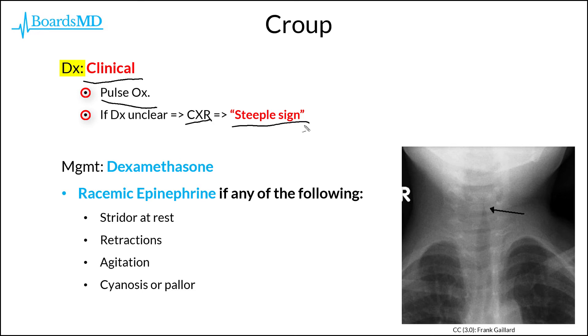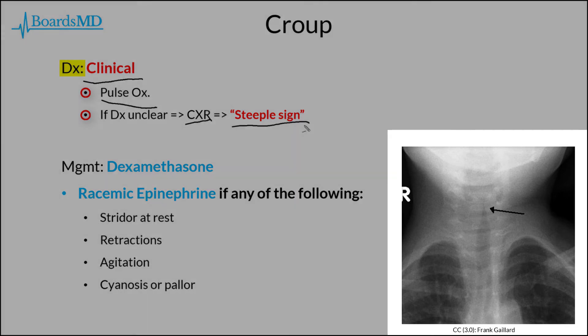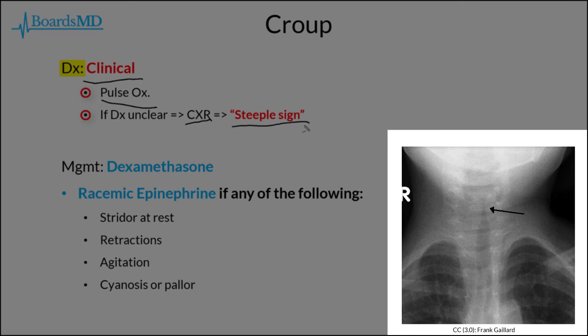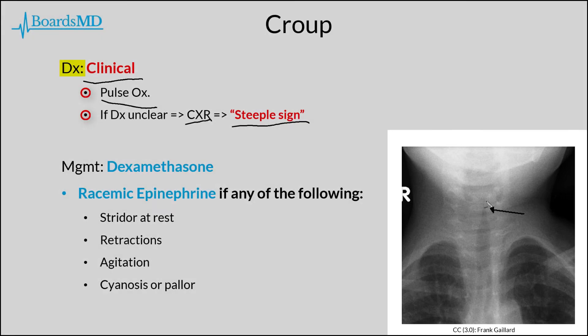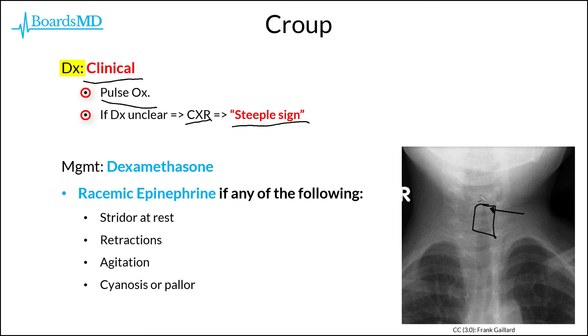The steeple sign can be appreciated on the right-hand side of the presentation, where you can see in this chest x-ray that there is clearly this narrowing of the upper trachea. This is consistent with an obstruction of the subglottic airway, which is ultimately going to produce the inspiratory stridor that we see in these patients.